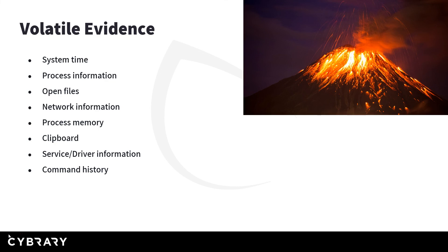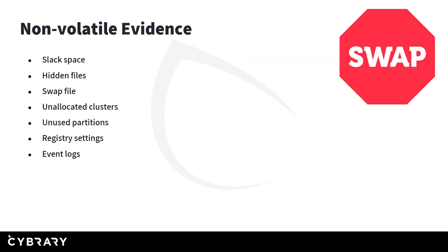Regarding types of evidence: volatile evidence should always be collected before shutting off a machine — do not pull the plug until you've acquired it. This includes system time, open files, process information, server and driver information, and command history. Non-volatile evidence persists after power is cut, such as slack space, hidden space, swap files, registry settings, and unused partitions.